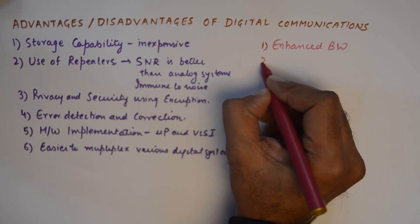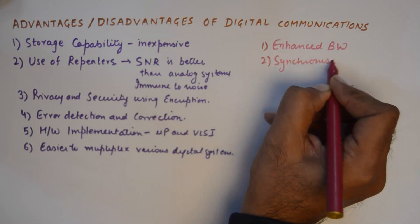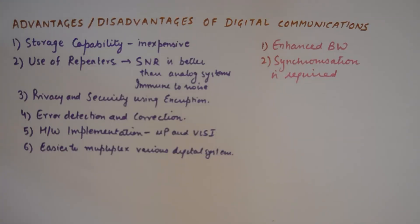The second disadvantage is that synchronization is required. Whenever we transmit zeros and ones, it becomes very important to take care of the timings. When a stream of zeros and ones is being transmitted, they must be separated from each other by the bit timing period, whose information must be propagated to both the transmitter and the receiver at the same time.